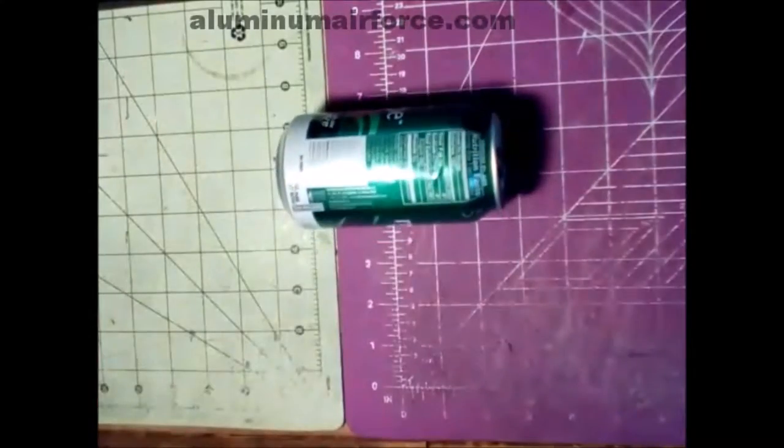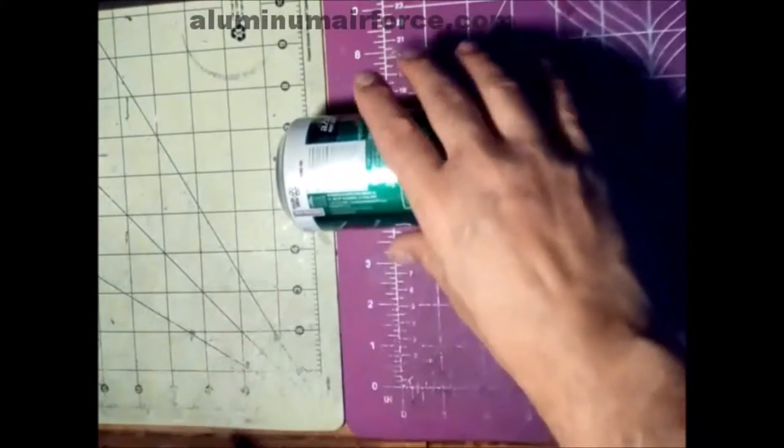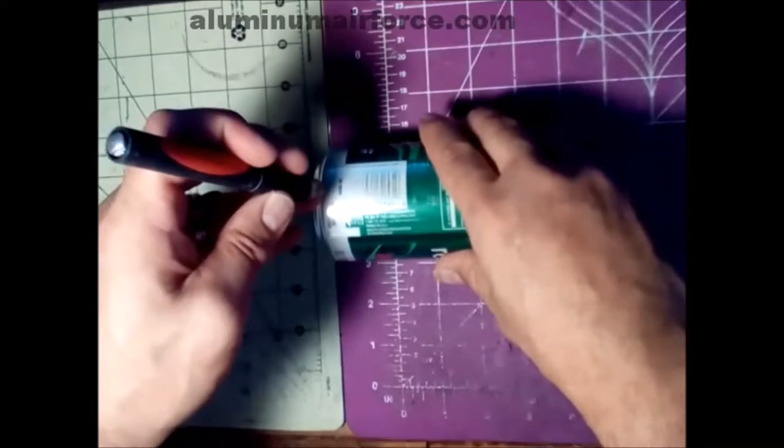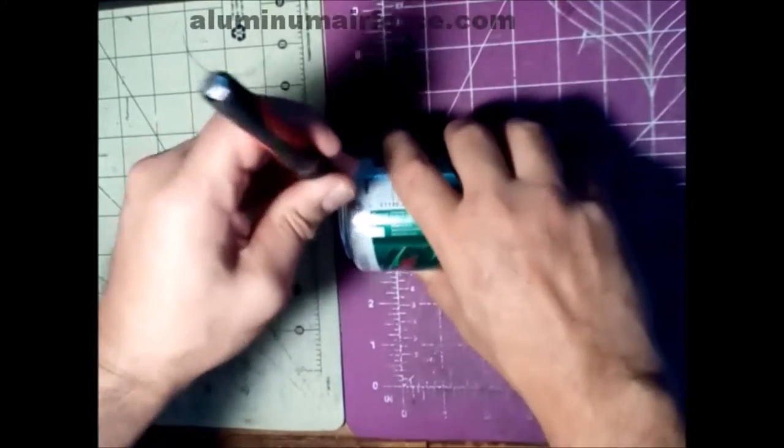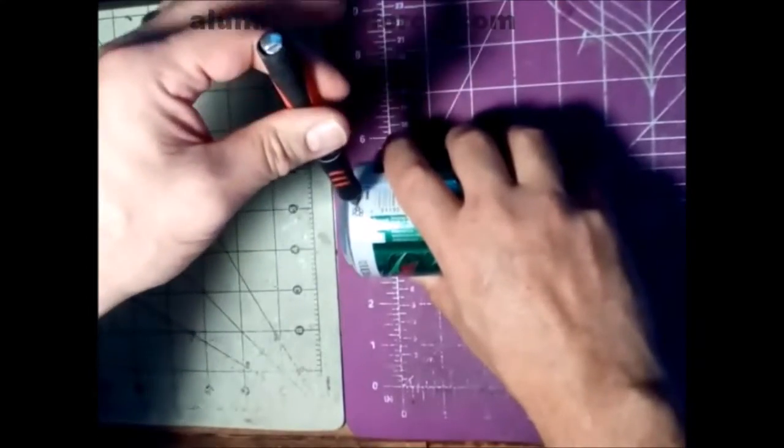Okay, we're going to take our can and lay it on a nice, flat, clean surface. We're going to hold it with one hand, take the X-Acto with your other, and we're going to go to about an eighth of an inch from the bottom of the can, and we're going to poke it through. There you go, poke through.